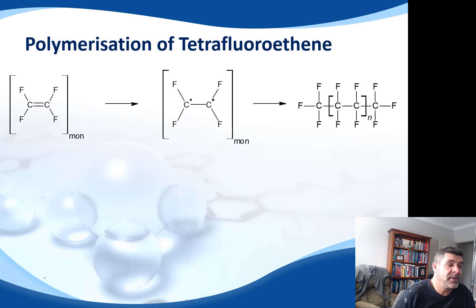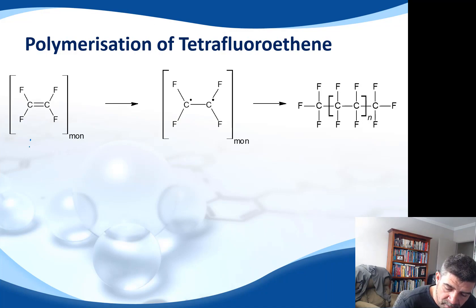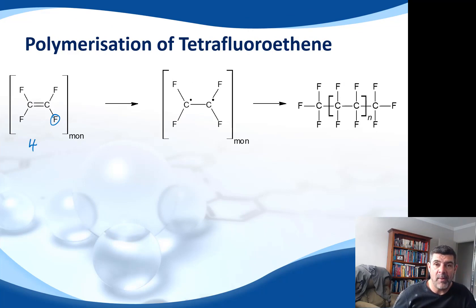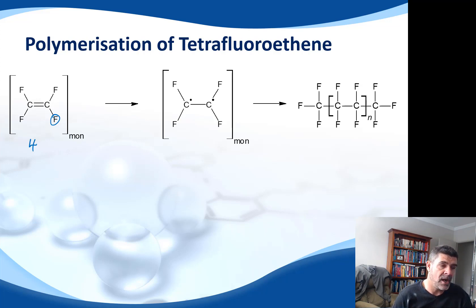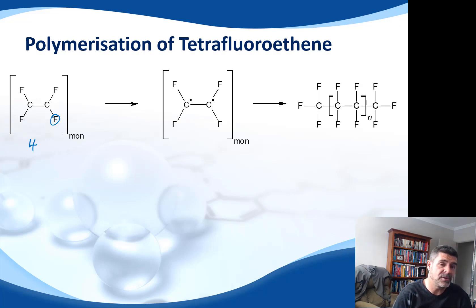Tetrafluoroethylene should conjure up the idea of 'tetra' meaning four, 'fluoro' meaning fluorine, and 'ethylene' is obviously our base, as we've used it for all of the other addition polymers we've looked at. Previously we had three hydrogens and then the fourth hydrogen being replaced with a chlorine for PVC, and with a benzene ring for polystyrene. This time all four of the hydrogens have been substituted with fluorines, and of course this makes a difference both to the electronegativities and the overall polarities.